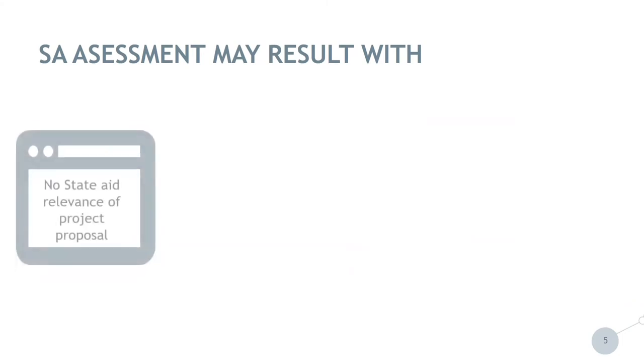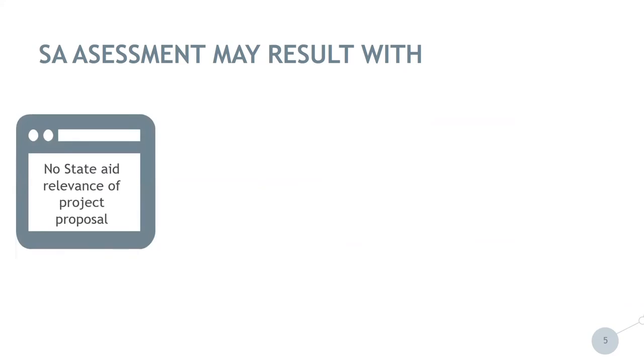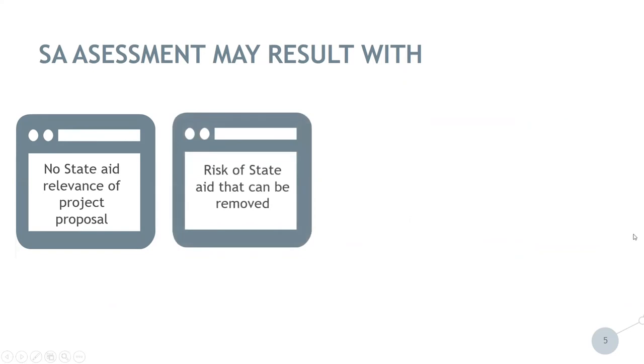We will now move to the possible results of the State Aid assessment of project proposals. The results may lead to one or more of the following scenarios for projects selected for funding. First, no State Aid relevance — in such case, there will be no contractual conditions on State Aid. Second, risk of State Aid that can be removed — specific obligations aimed at eliminating State Aid costs will be included in the subsidy contract, for example wide dissemination of certain project outputs. These obligations will have to be respected.